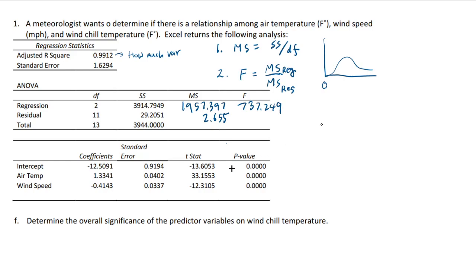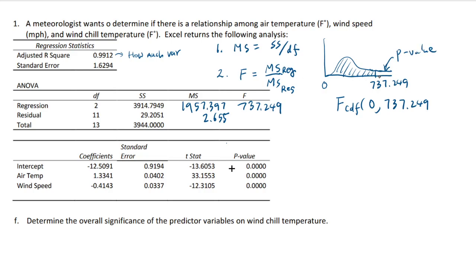Now we have to use the F distribution to see what value this gives you. The F distribution CDF is going to give you the area under the curve from 0 to the F value of 737.249. But our p-value is the other part which is not shaded. Therefore the p-value equals 1 minus the F distribution's cumulative distribution function of the area from 0 to 737.249.